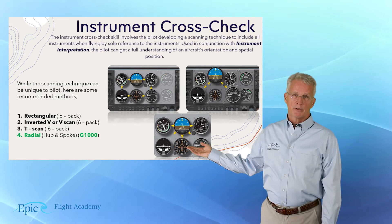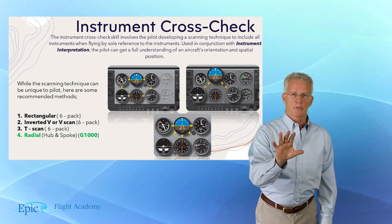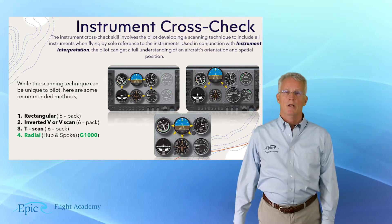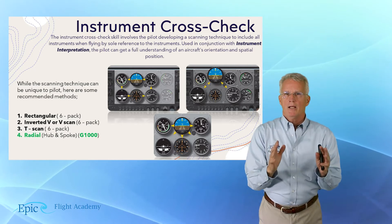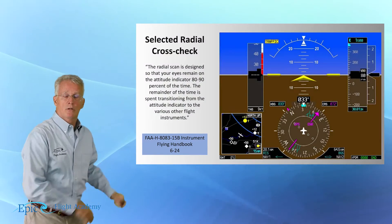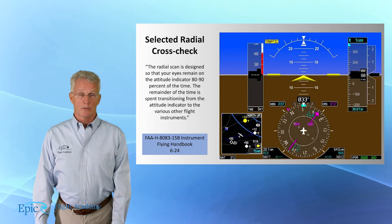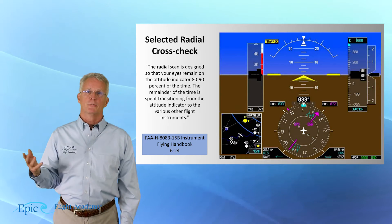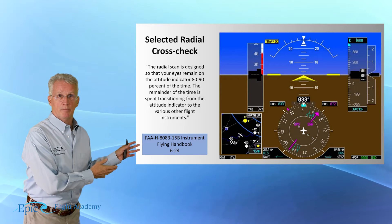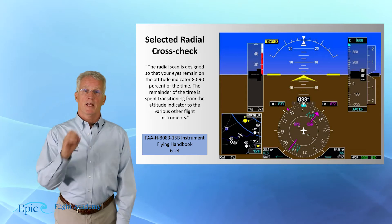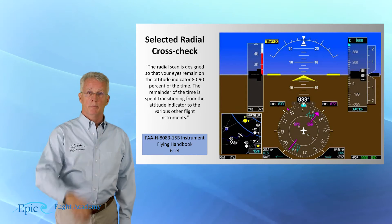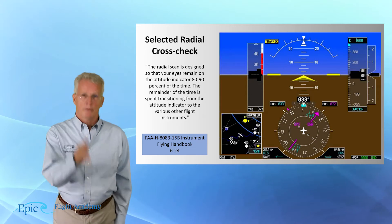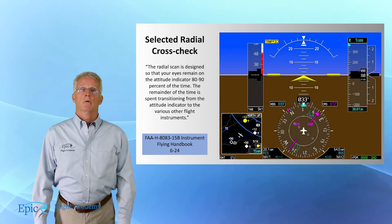The radial scan focuses on the attitude indicator and then radiates out to the various instruments as a cross-check, and back to the attitude indicator. Now take a look at this slide — this is a close-up of what Garmin's G1000 looks like if you're flying the 172 models at EPIC Aviation in New Smyrna Beach. Notice it still follows that basic T: the attitude indicator right in the middle, the altimeter immediately to the right, airspeed immediately to the left, and heading straight down. I still have my basic T with the attitude right in the middle.